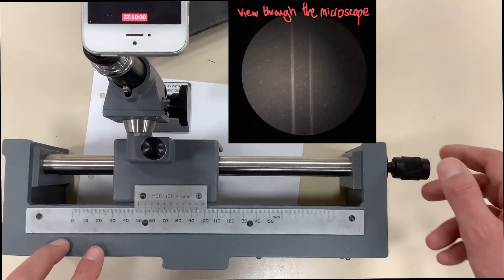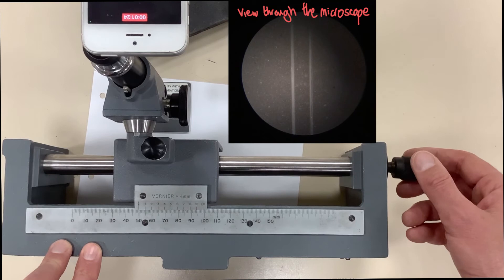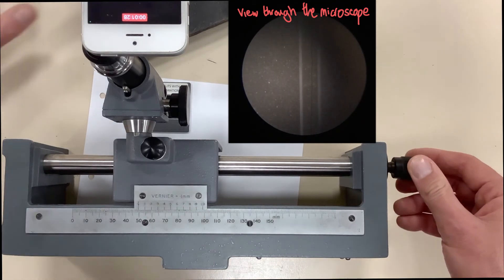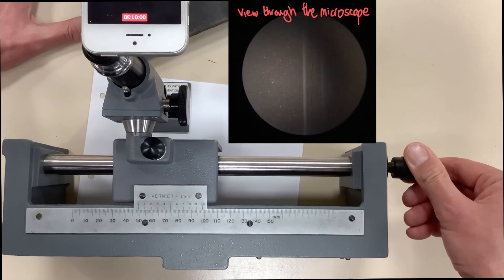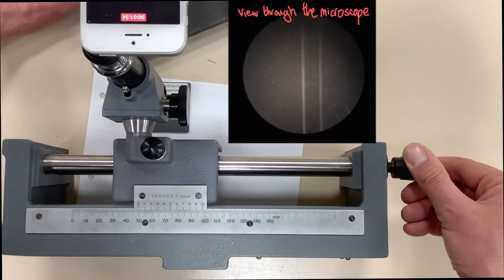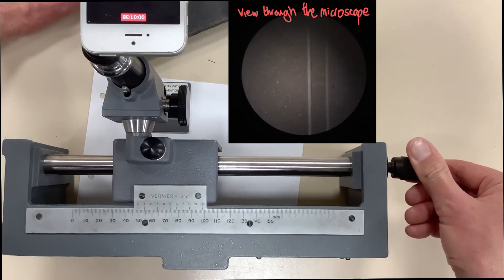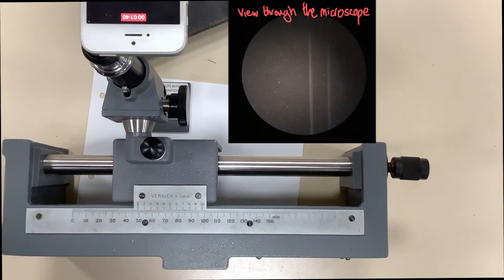Then we need to turn this again so that the wire on the view lines up with the second slit. Let me just adjust the second camera.